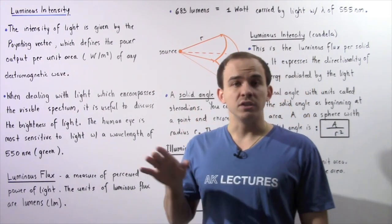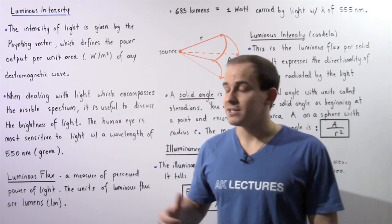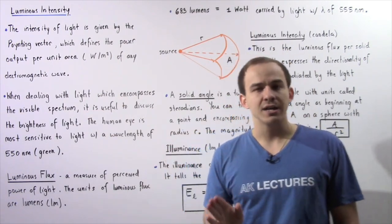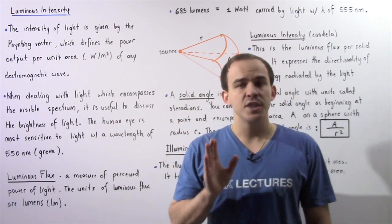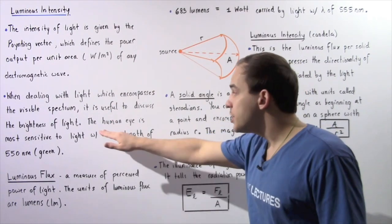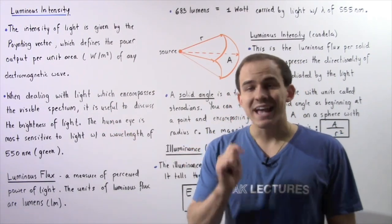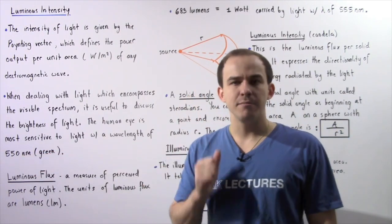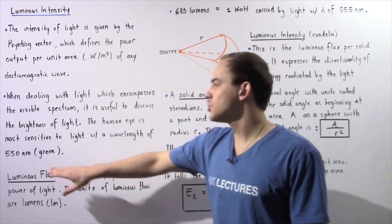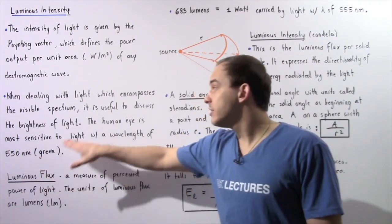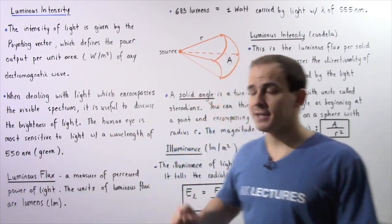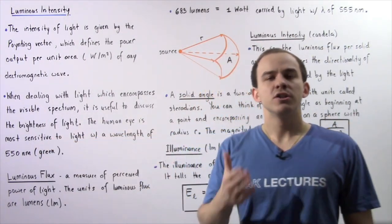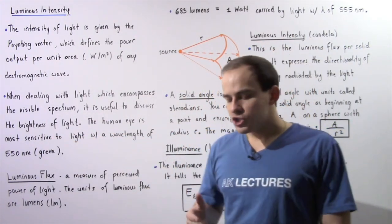Whenever we're dealing with light that encompasses the visible spectrum, it is useful to discuss the brightness of that light. The human eye is most sensitive to light with a wavelength of 550 nanometers, which corresponds to the color green.